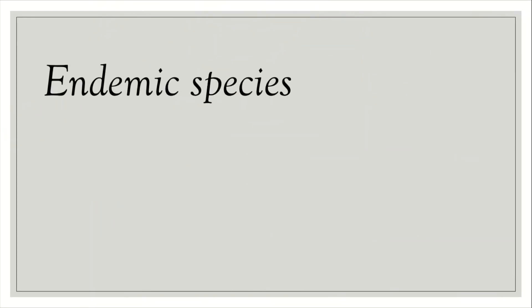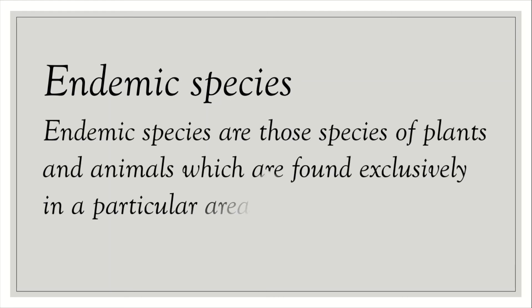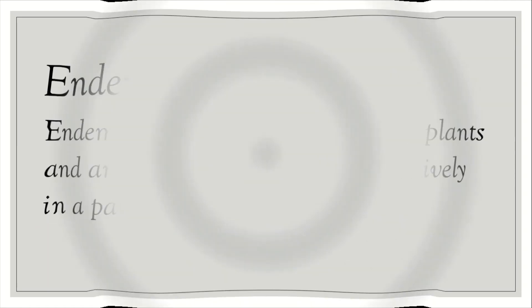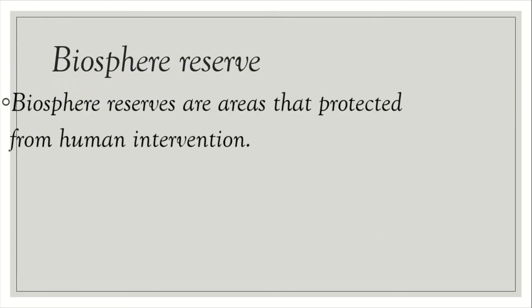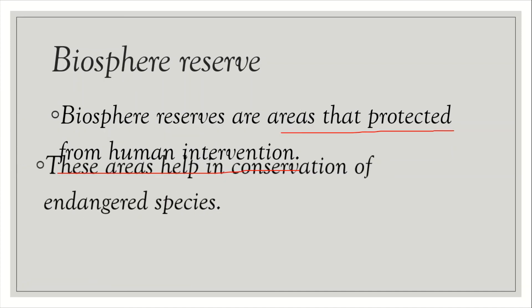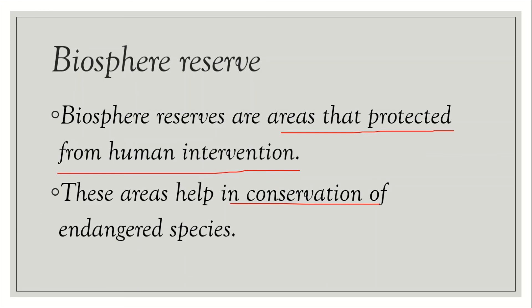Endemic species. Endemic species are those species of plants and animals which are found exclusively in a particular area. Biosphere reserves are areas that are protected from human intervention. These areas help in conservation of endangered species.